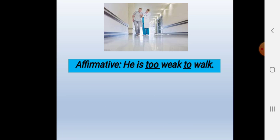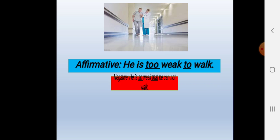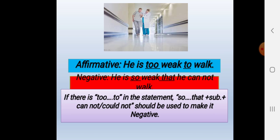You see this one — this is also an important rule. 'He is too weak to work.' You see the negative form: 'He is so weak that he cannot work.' If there is 'too...to' in the statement, 'so...that' plus subject plus 'cannot' or 'could not' should be used to make it negative.